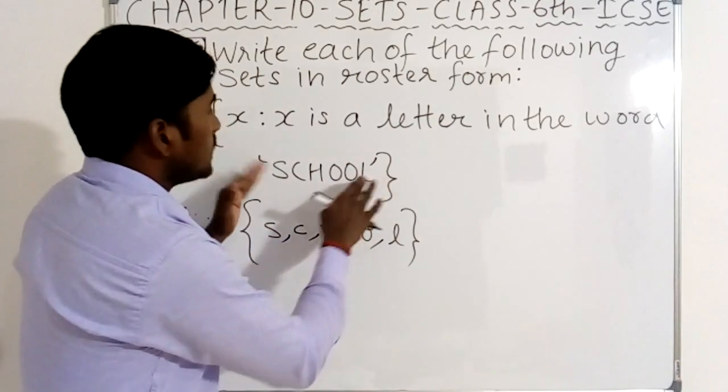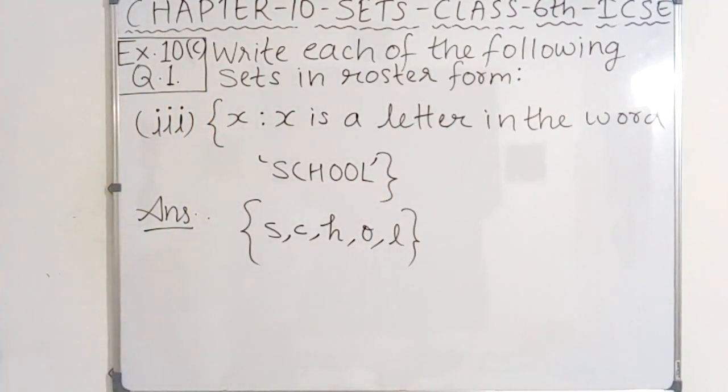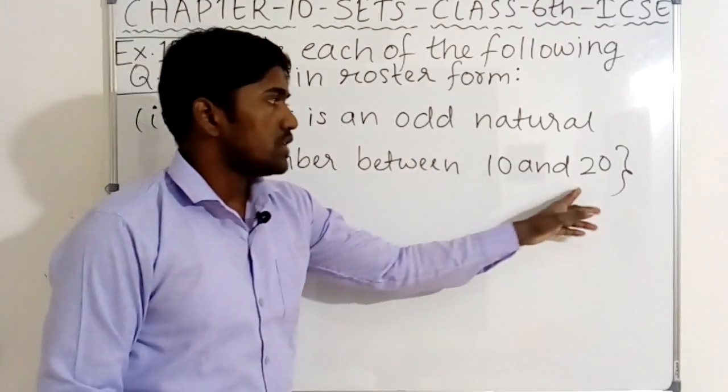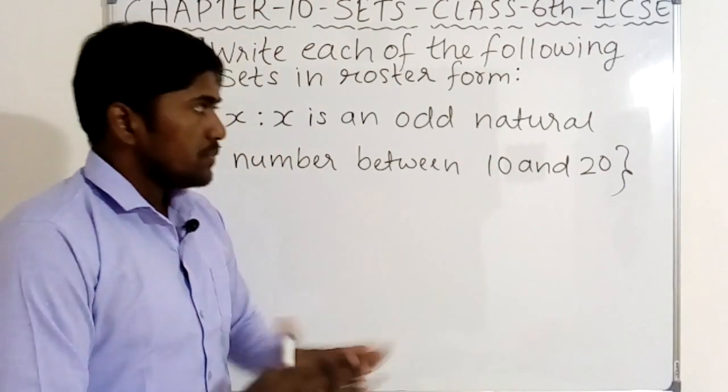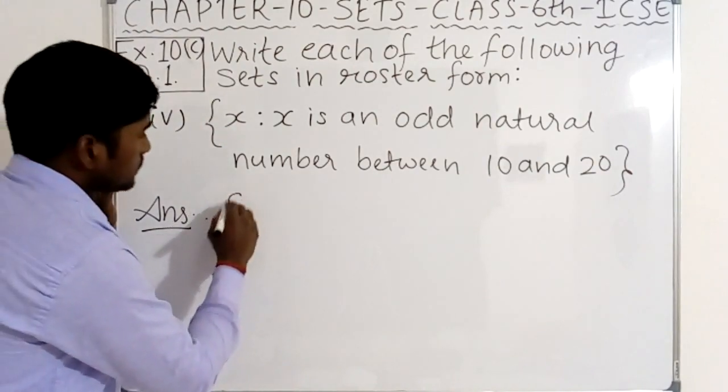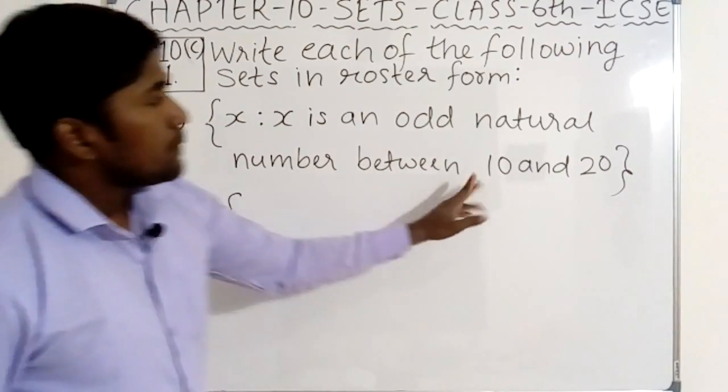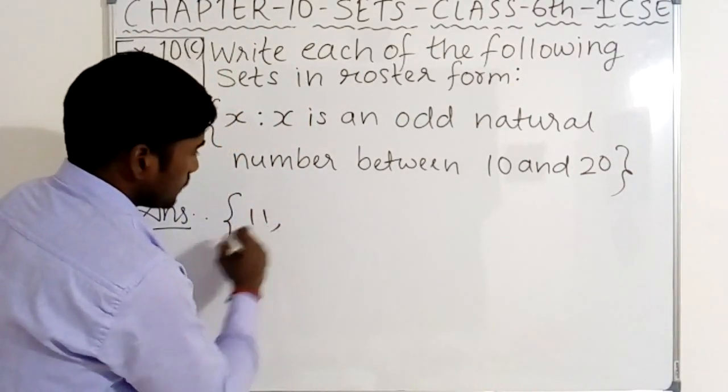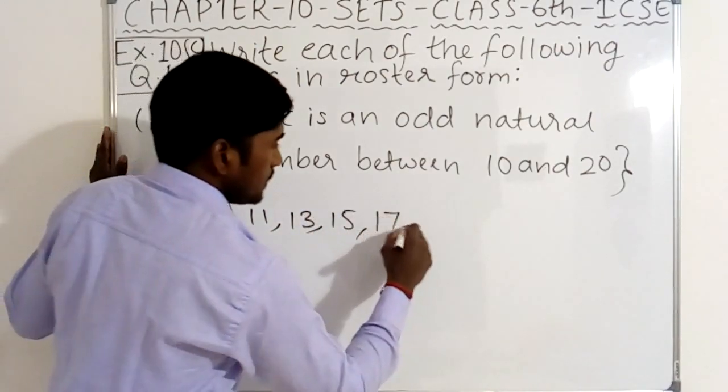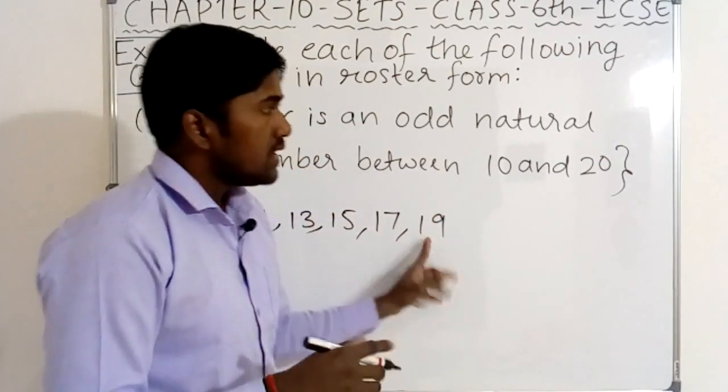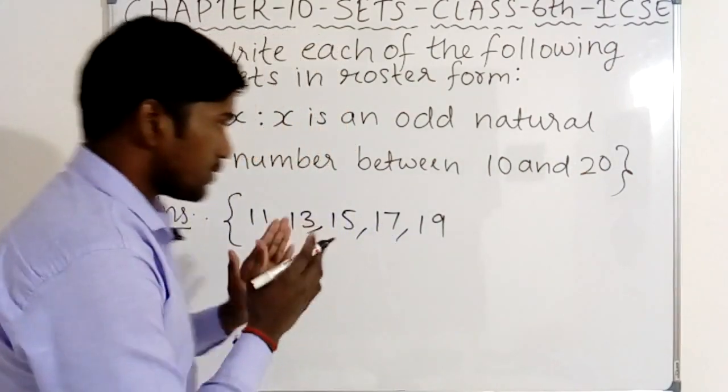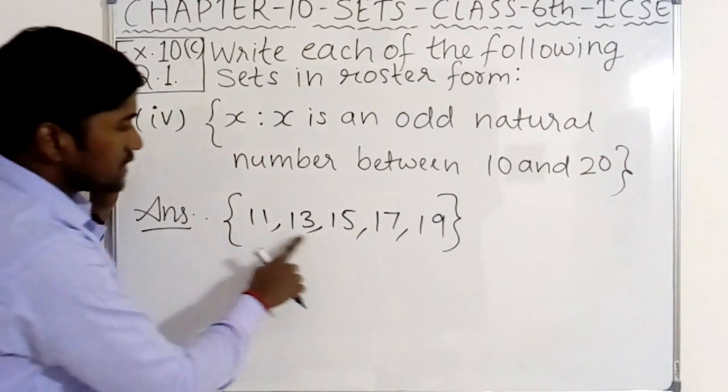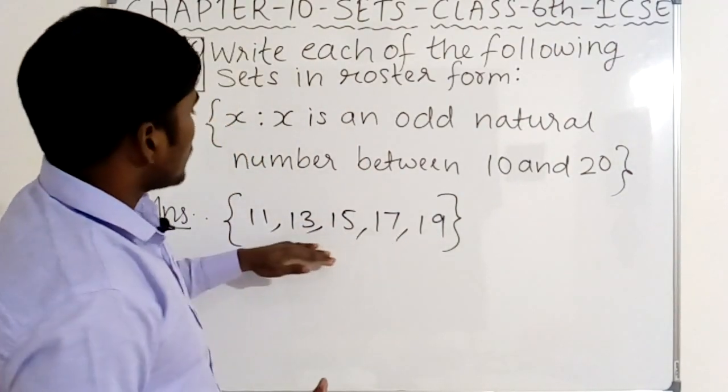Now see point number four. What is given? That is the element of this set such that x is a natural number between 10 and 20. So we have to make the set of all natural numbers between 10 and 20 in roster form. First of all, natural numbers between 10 and 20: 11, 12, 13, 14, 15, 16, 17, 18, 19. All these numbers are separated by comma.